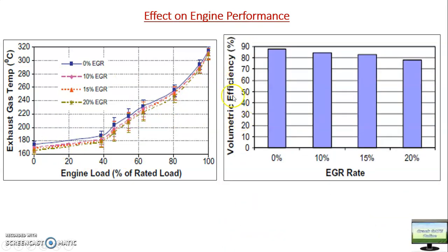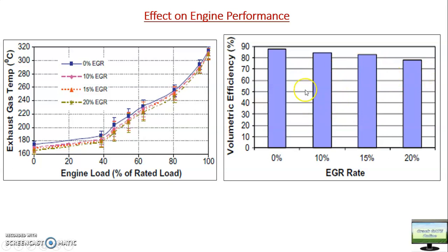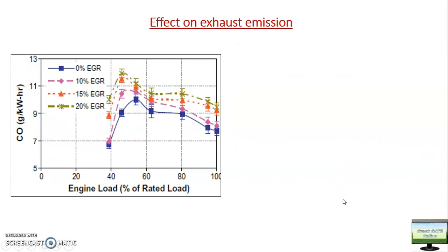For volumetric efficiency, with EGR it is reducing. Without EGR, volumetric efficiency is around 85%, and it consistently decreases with increasing EGR percentage. This reduces engine performance because the amount of fresh air entering the engine is decreasing.